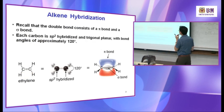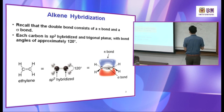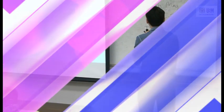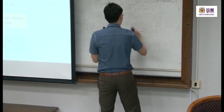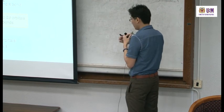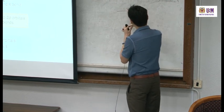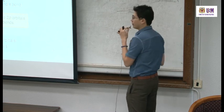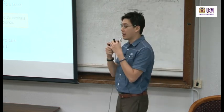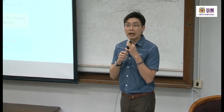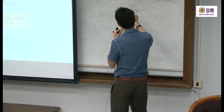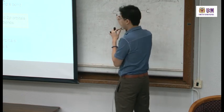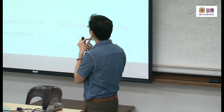You must also be able to draw alkynes correctly. For example, a line structure with a triple bond — how many carbons are there? It's 4, because alkyne is linear in shape: one carbon here, one here, one here, and one here. The simplest alkyne is acetylene.